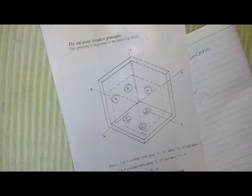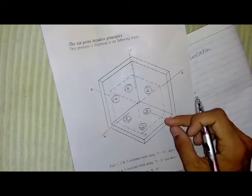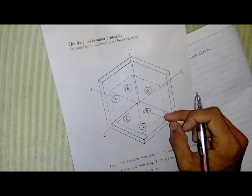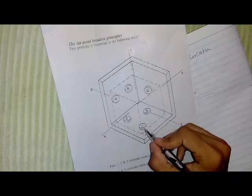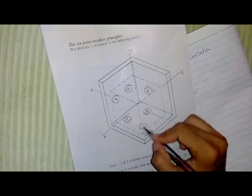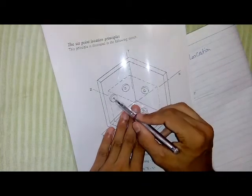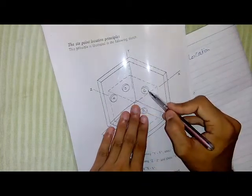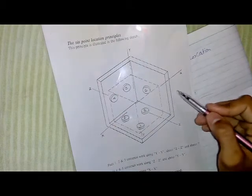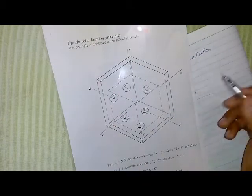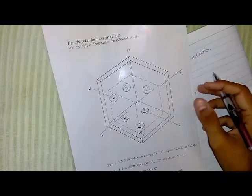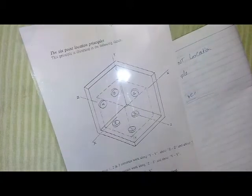In this principle, a body is fixed from the base with three points: one, two, three. These three points are fixed from the base, two from one side, and one point from the other side. This principle is used in tooling engineering where we have to fix something.